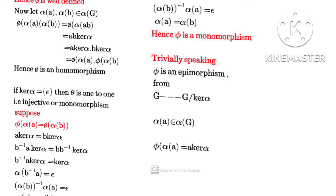To prove epimorphism — the last part — we recall that if α(a) belongs to the group α(G), and from the first part G is mapped to G/N where N equals ker(α), then g maps to g·ker(α), which equals φ(a) equals a·ker(α). This is what we have been using throughout the theorem. This completes the proof of the First Fundamental Theorem of Homomorphism, also known as the First Isomorphism Theorem.